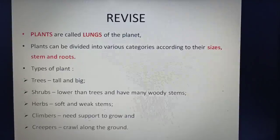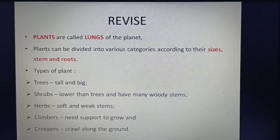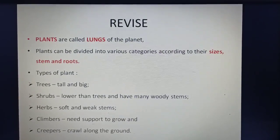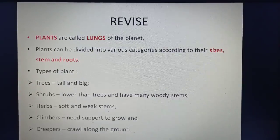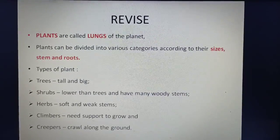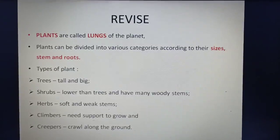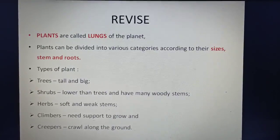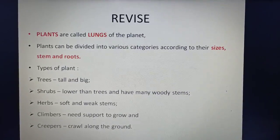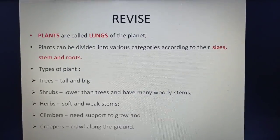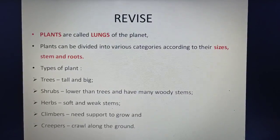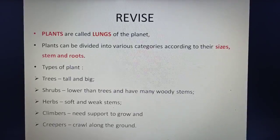Now let's revise what we have studied in today's class. Plants are called the lungs of the planet. Plants can be divided into various categories according to their sizes, stems and roots. Trees — they are tall and big. Shrubs — lower than trees and have many woody stems. Herbs — they have soft and weak stems. Climbers — they need support to grow. Creepers — they crawl along the ground.